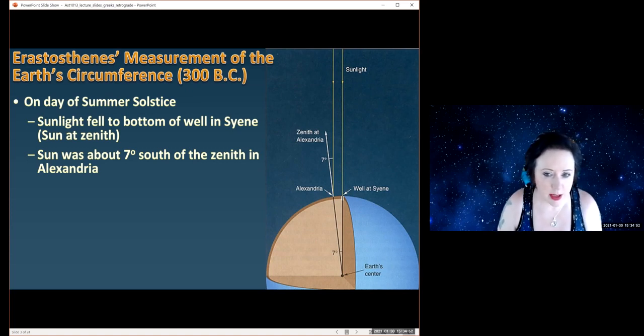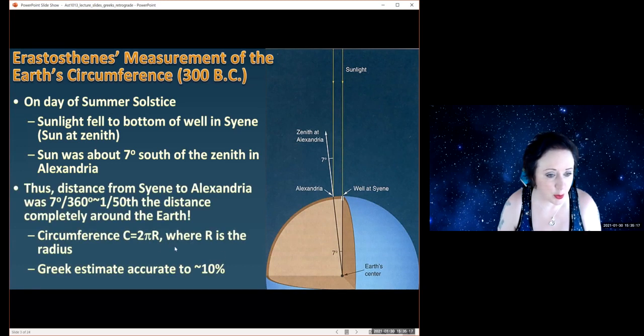What that means is that he knows what the angle is between where he was in Syene and Alexandria. We can use fairly simple trigonometry to figure out the distance. The distance from Syene to Alexandria gives us one side of a triangle, and the angle is seven degrees. That means we can work out how far away we are from the earth's center. The full circle is 360 degrees, and the distance from Syene to Alexandria was only seven degrees, so that's about a fiftieth of the distance around the earth.